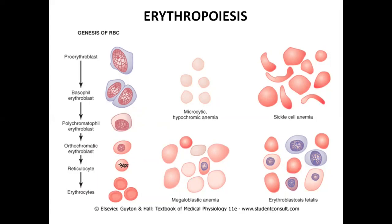All blood cells are formed from the bone marrow by pluripotent hematopoietic stem cells under the influence of growth and differentiation inducers. From the pluripotent hematopoietic stem cells, colony-forming unit blasts are formed, and from there proerythroblasts are formed. Proerythroblasts are large cells, 15 to 20 micrometers in size, with a large nucleus containing nucleoli and a reticular network. They have little cytoplasm, which is blue in color due to increased RNA.